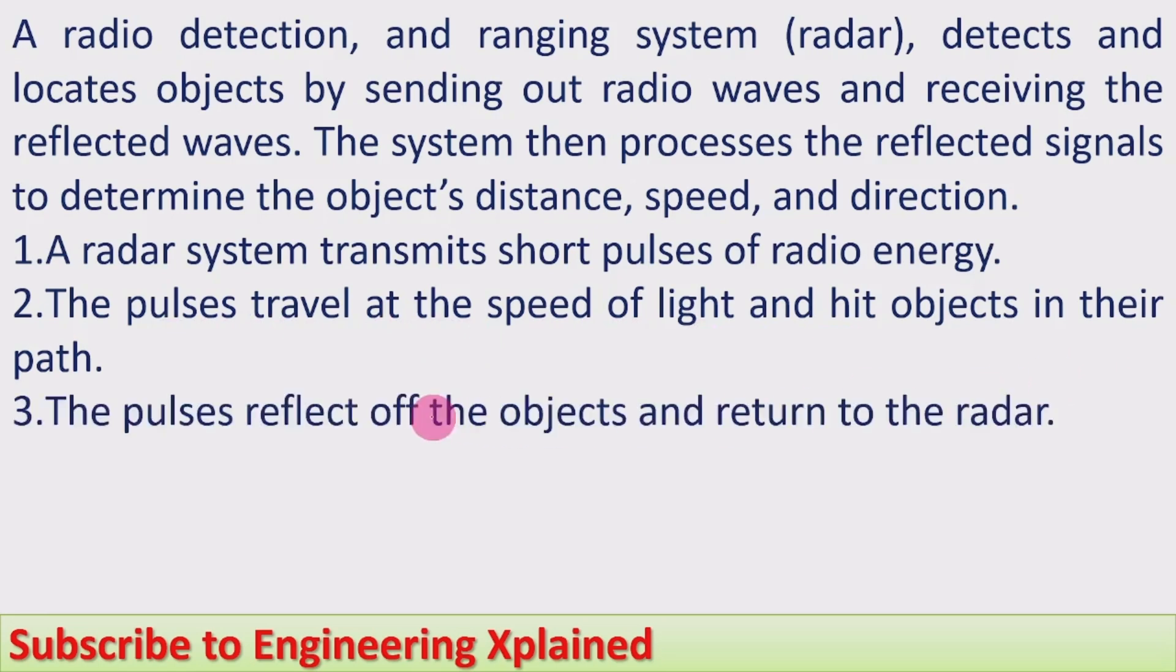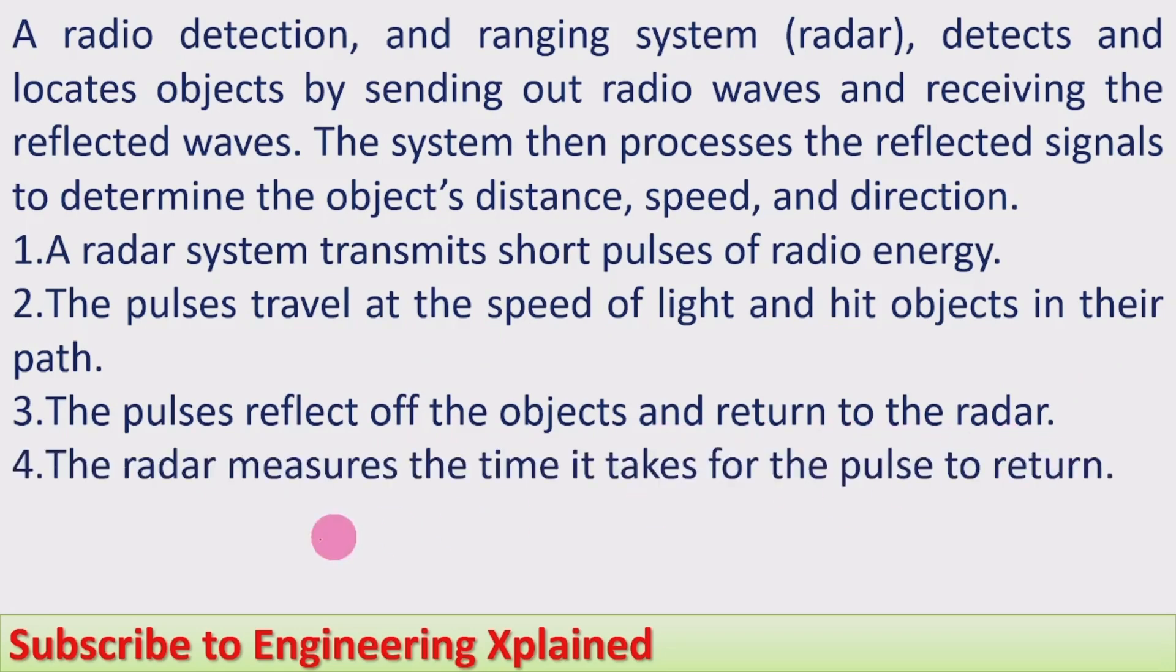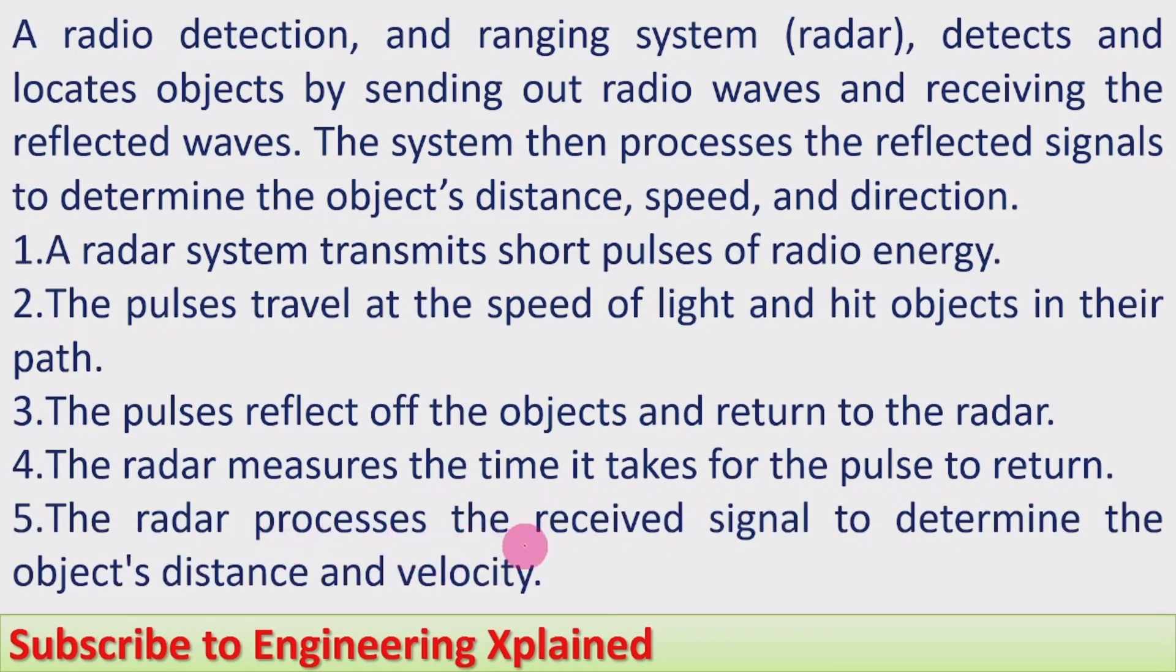The pulses reflect off the objects and return to the radar. The radar measures the time it takes for the pulse to return. The radar processes the received signal to determine the object's distance and velocity.